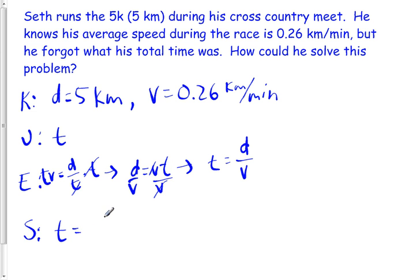Time equals our distance was 5 kilometers divided by 0.26 kilometers per minute. Okay? Those will cross out and our minutes will flip up to the top because it's in the bottom of the, it's on the denominator of a denominator. So, what we're going to end up with is 19.23 minutes.